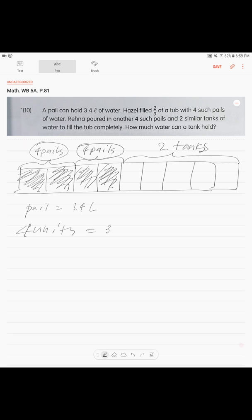So, we know that 1 pail is 3.4 liters, times how many pails? We have 8 of them. So, 4 units is 27.2 liters of water.